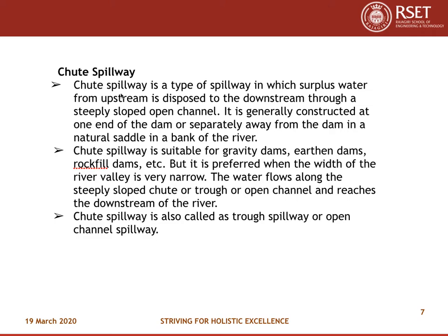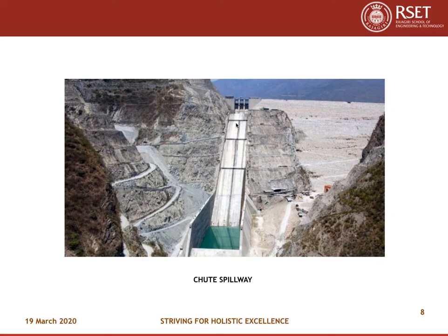Chute spillway is a type of spillway in which surplus water from upstream is disposed to the downstream through a steeply sloped open channel. It is generally constructed at one end of the dam or separately away from the dam in a natural saddle in a bank of the river. Chute spillway is suitable for gravity dams, earthen dams, rock fill dams, etc., but it is preferred when the width of the river valley is very narrow. The water flows along the steeply sloped chute or trough or open channel and reaches the downstream of the river. Chute spillway is also called trough spillway or open channel spillway.